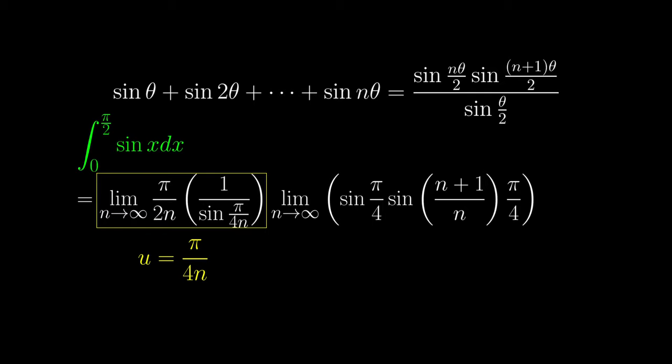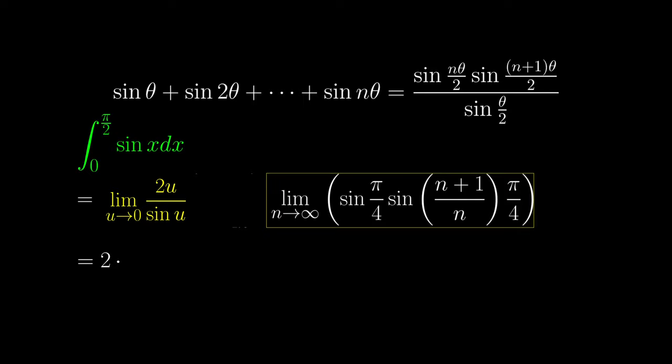To tackle the first limit, we can use the substitution u equals π over 4n, which makes u tend to 0 since n tends to infinity, and so we have this limit, which equals 2.